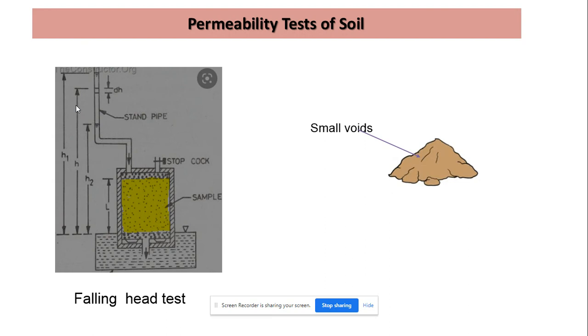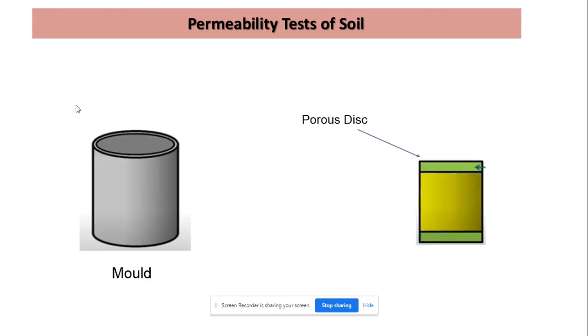In this falling head permeability test we have a mold in which the soil sample is to be placed. If the soil sample is undisturbed, we will trim it to the size of the mold and place it in. If we have disturbed soil sample, we can know the volume of mold from the diameter and height.